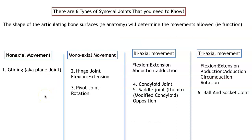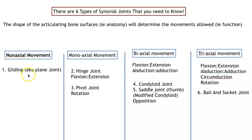These are the six types of synovial joints. Remember, it is the shape of the articulating bone surfaces — the anatomy, how it's built — that will determine the movements that are allowed, its function. We're going to start with plane, or gliding, joints. These are only going to allow non-axial movement — not really moving in any axis — just allowing gliding-type movement.